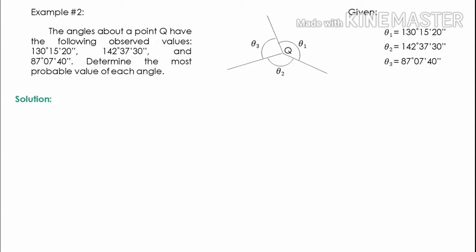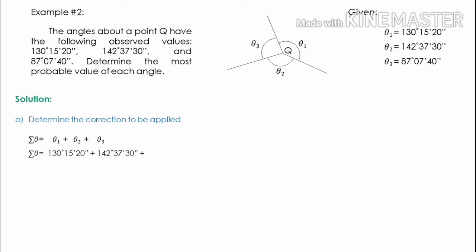First step, we have to determine the correction to be applied. Let us find the sum of these angles: the summation of theta equals θ1 plus θ2 plus θ3. Adding the measured angles — 130°15'20" plus 142°37'30" plus 87°7'40" — the sum of the observed angles about point Q is 360 degrees 0 minutes and 30 seconds.